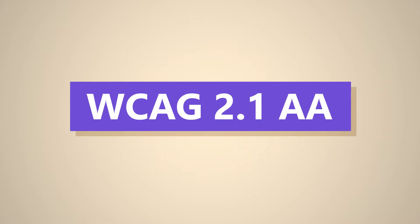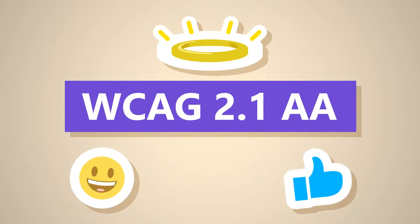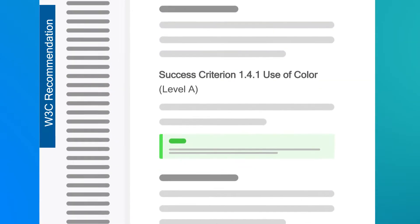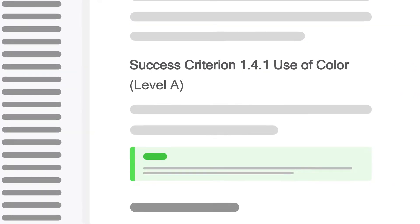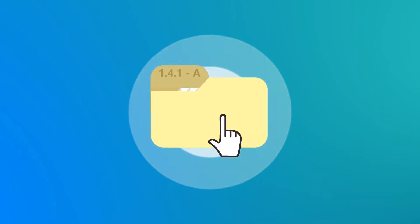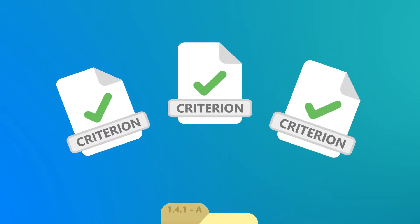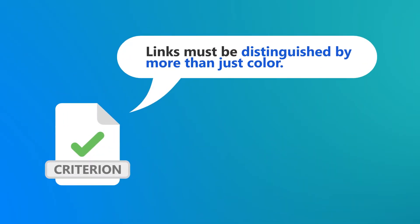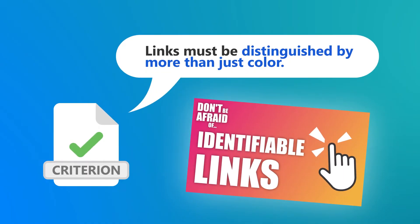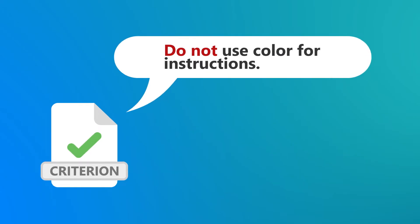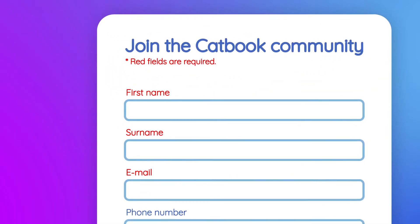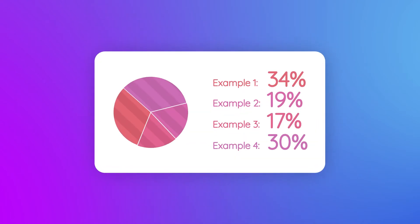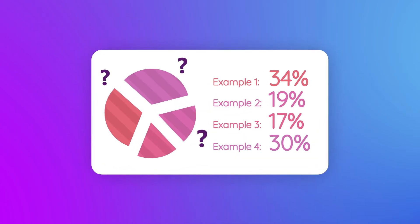AA is tougher to master, but still well within the reality of the web today. All the guidelines are numbered, like 1.4.1 use of color. This is a single A requirement, and it covers a fair bit of ground. Inside that guideline are success criteria. One such criterion is: links must be distinguished by more than just color. But it also covers things like not using color for instructions, like red fields are required, or making visuals like pie charts with no labels or patterns to discern the segments.